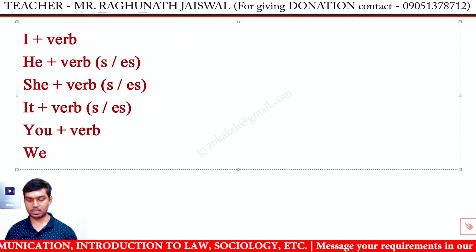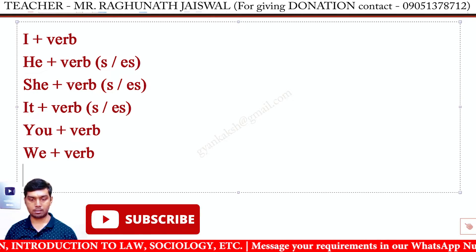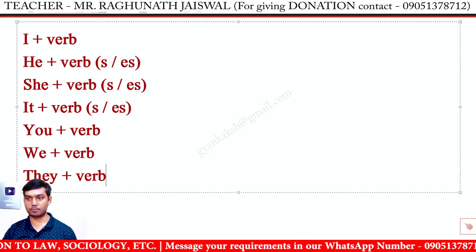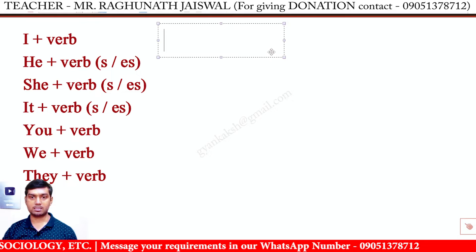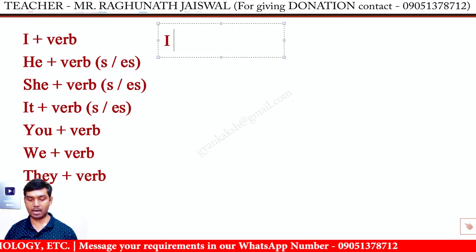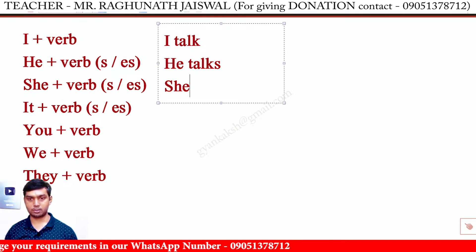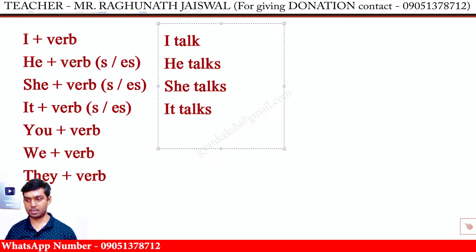We के साथ normal verb रहता है, They के साथ normal verb रहता है। इसका मतलब — जैसे I talk, He talks, It talks — verb 'talk' के साथ S लग गया third person singular में।